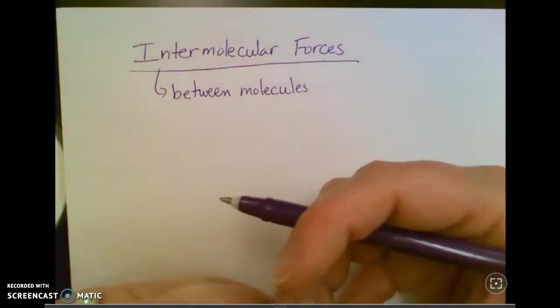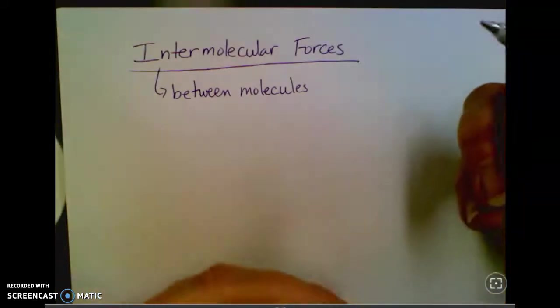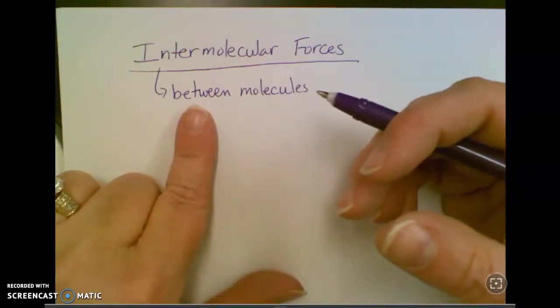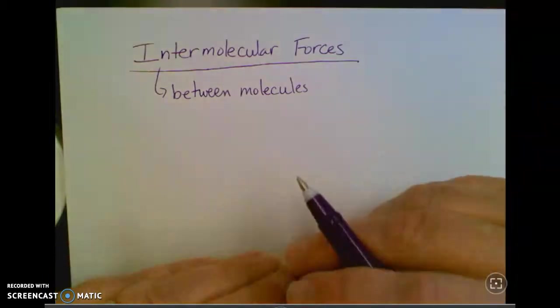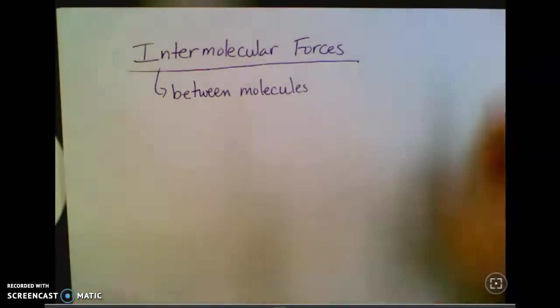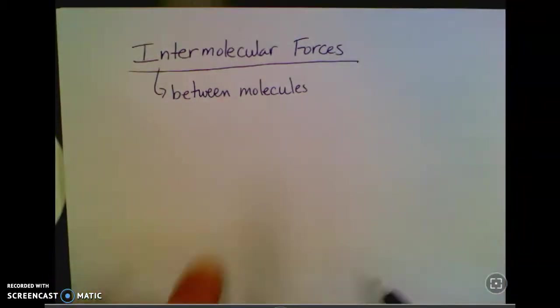If you've got a lot of attraction, it takes a lot of energy to overcome those attractions, so you have high boiling and melting points. But if you don't have much attraction to other molecules, they can be separated very easily. Those are the things that are gases at room temperature.